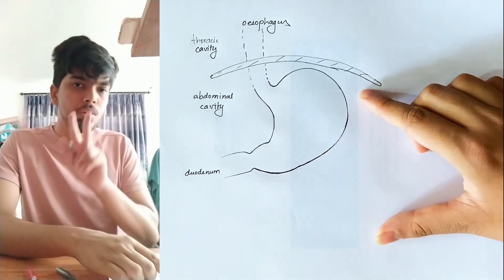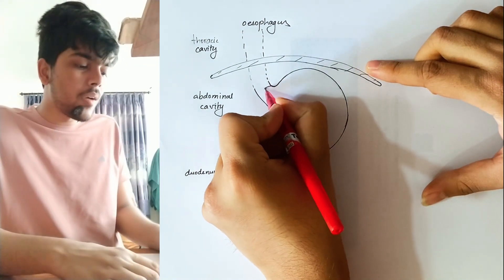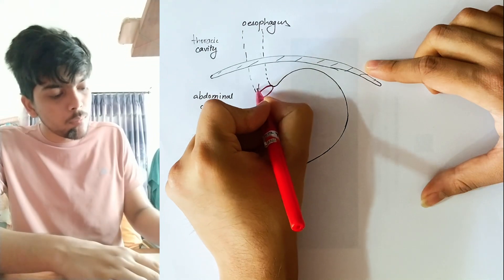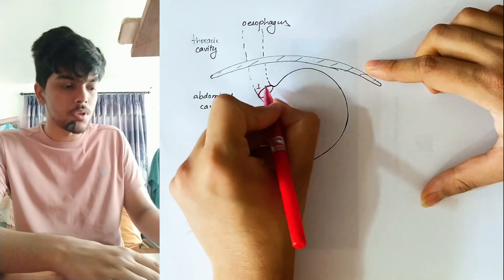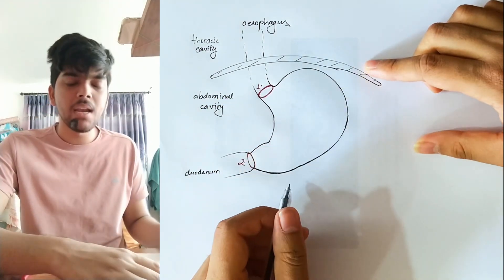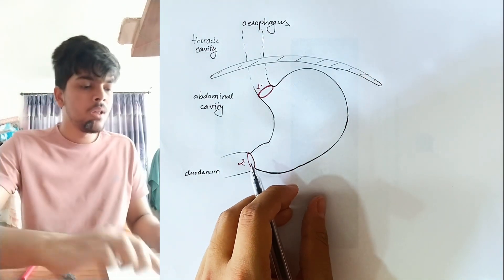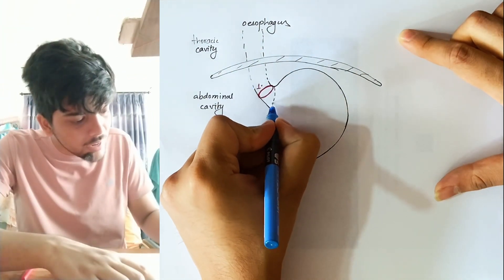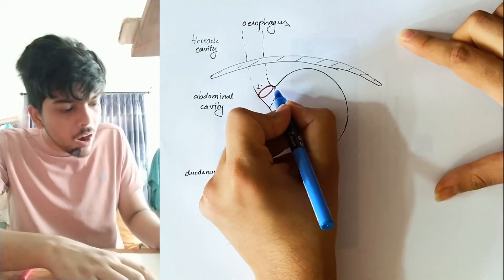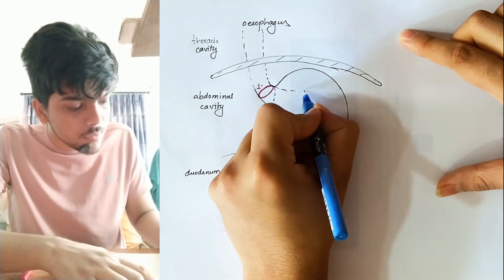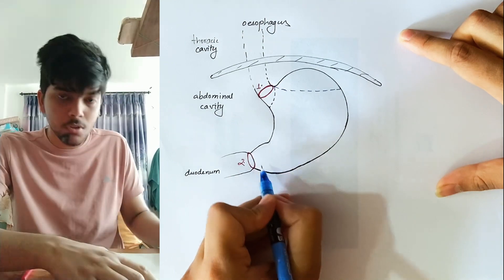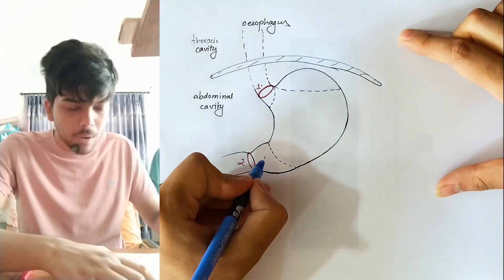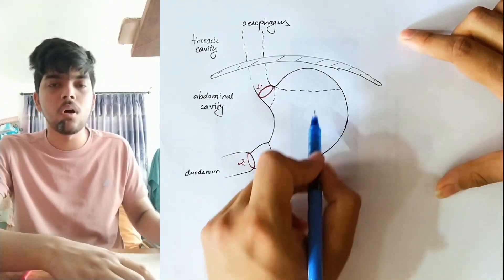The stomach is guarded by two sphincters — one at the start and one at the end. The stomach is a slightly J-shaped organ and is divided into four major parts. The part of the stomach in direct contact with esophagus is the cardiac region. The part that forms the hump of the stomach, like the hump of a camel, is the fundus. The part at the end of the stomach that forms a funnel shape is the pylorus. Between the pylorus and the fundus is the major part of the stomach, called the body.